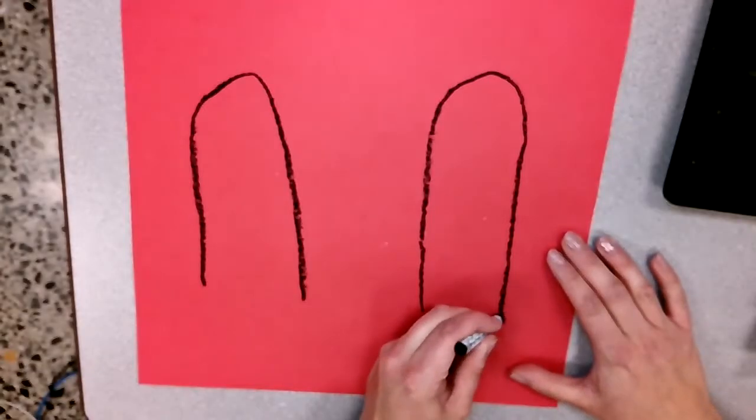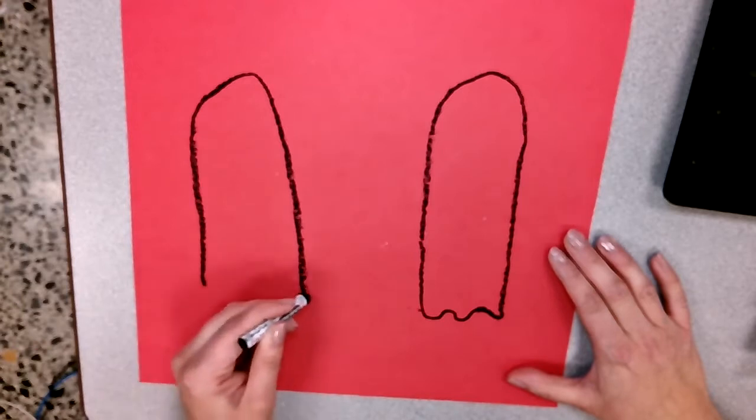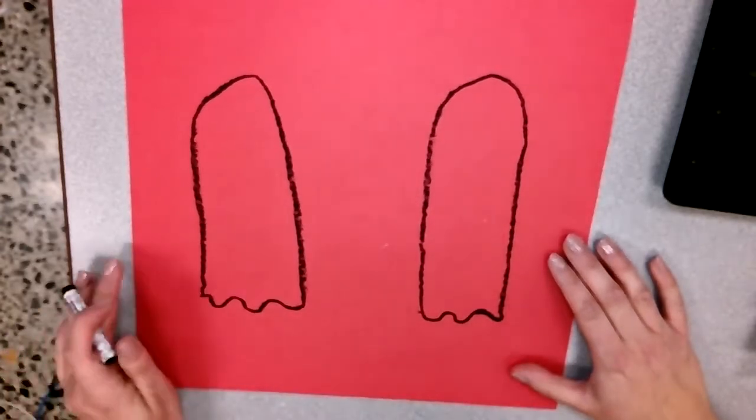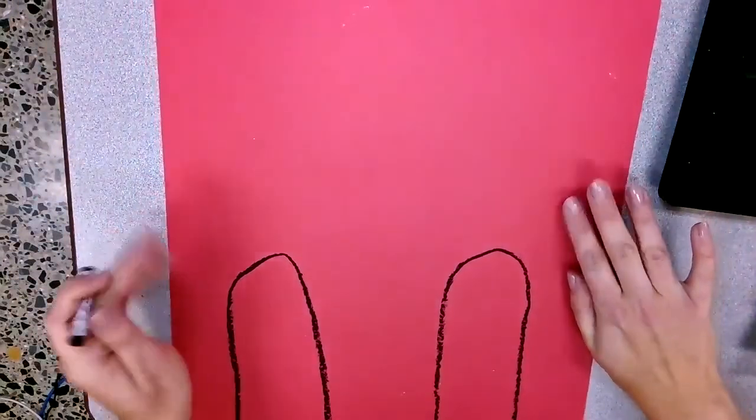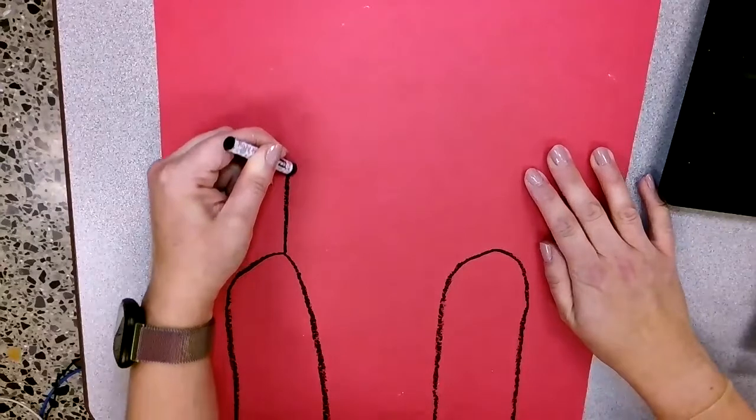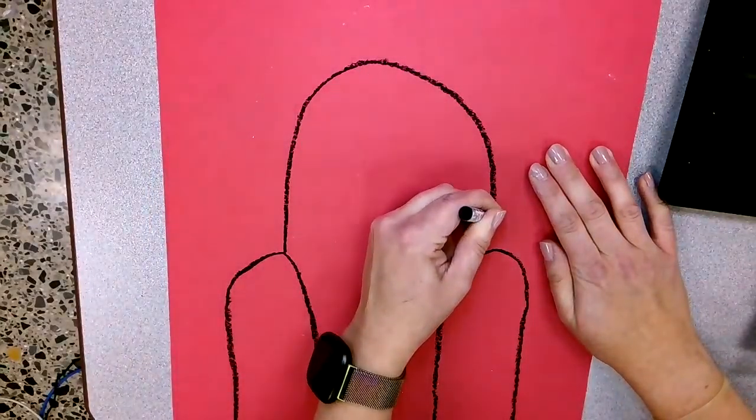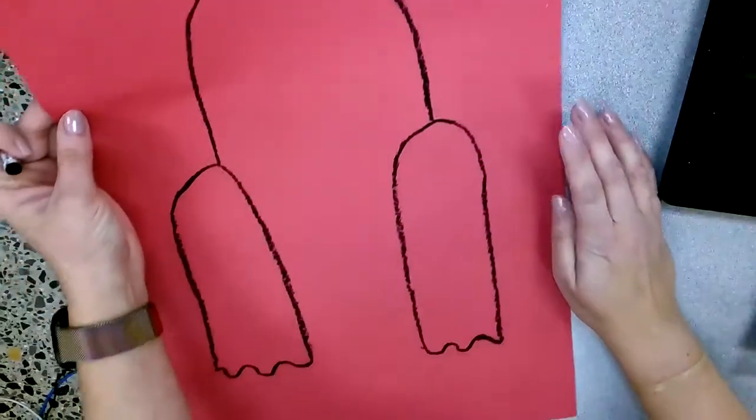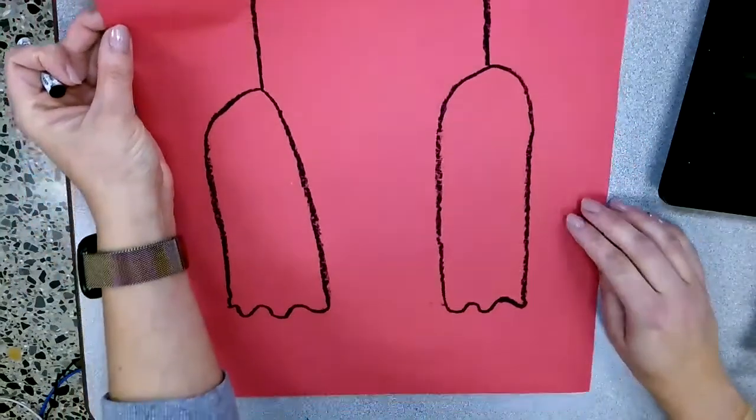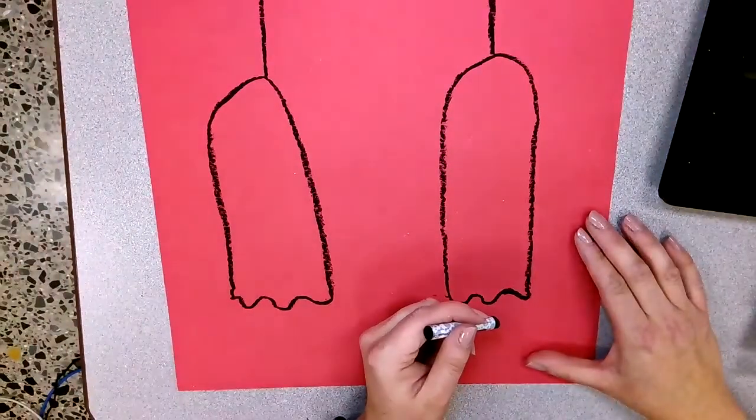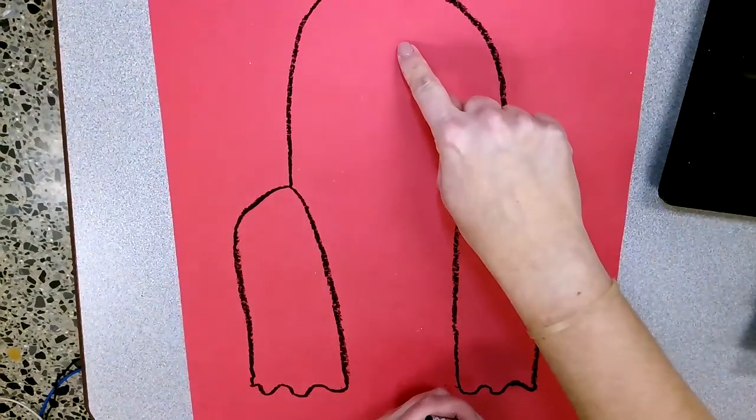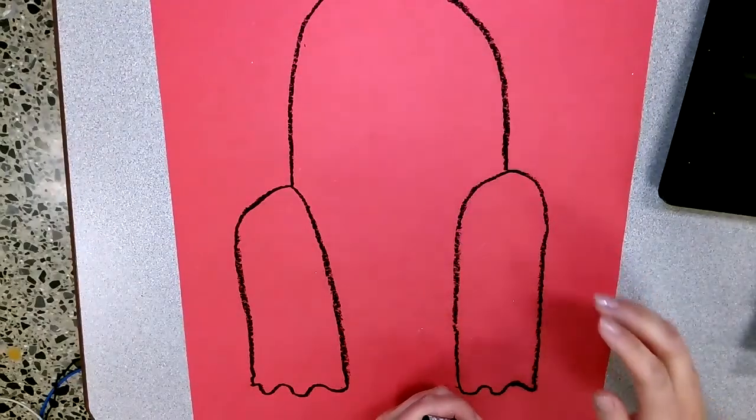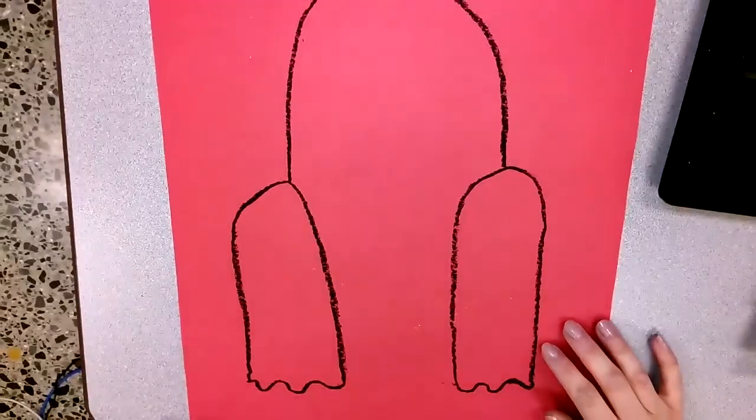Now, we're going to close them off by adding some wavy curved lines like that. Now, we're going to draw another upside down letter U to connect the first two. You're going to see that it looks a little bit bigger, quite a bit bigger than the others. Now, this part doesn't look like a gorilla yet, but it will. This is going to be the gorilla's head. And these two things here are going to be the gorilla's arms.